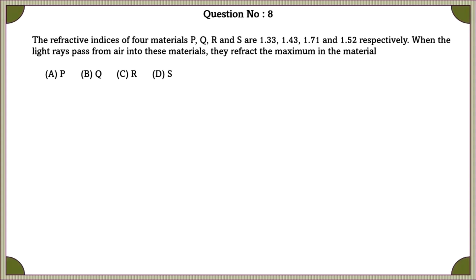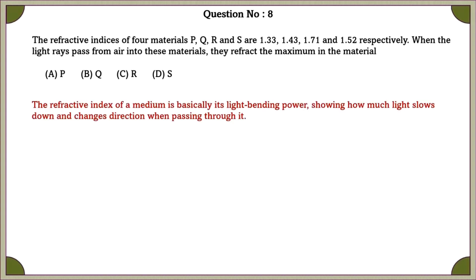Question number 8. The refractive index of four materials P, Q, R, and S are 1.33, 1.43, 1.71, and 1.52 respectively. When the light rays pass from air into these materials, they refract the maximum in the material. The refractive index of a medium is basically its light-bending power, showing how much light slows down and changes direction when passing through it.